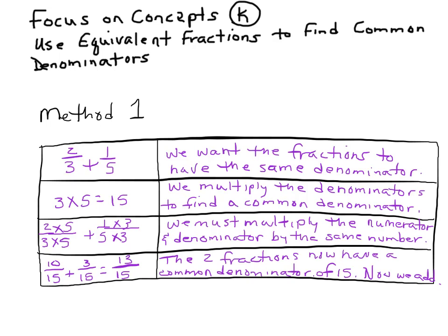We can do this: three times five is fifteen. We're just multiplying the denominators to find a common denominator. So if we're multiplying three times five to get fifteen, we're going to multiply two thirds by five over five and one fifth times three over three, because three times five is fifteen. Two times five is ten, three times five is fifteen. One times three is three, five times three is fifteen. Ten fifteenths plus three fifteenths is thirteen fifteenths — now they have that common denominator of fifteen.